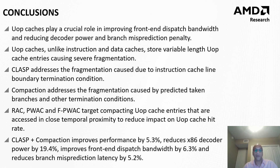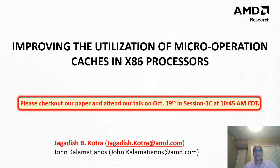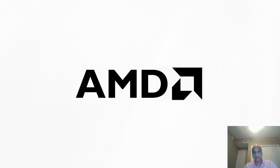To conclude, UOP cache plays a crucial role in front-end efficiency in terms of performance and power. Unlike instruction and data caches, micro-op cache entries written to UOP caches are variable in length, causing severe fragmentation. In this work, we propose two solutions — CLASP and compaction — that address this fragmentation, resulting in a performance improvement of 5.3% and a reduction in branch misprediction latency by 5.2%. Please check out our paper and attend our talk on October 19th in session 1C at 10:45 a.m. central. Thank you.